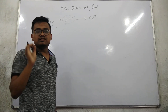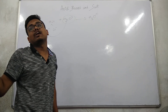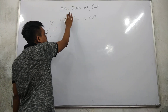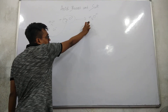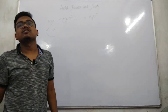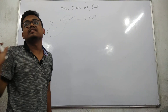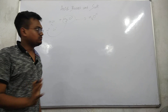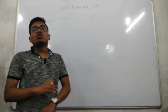So an acid is a compound which, when dissolved in water, yields hydronium ion as the only positively charged ion — there is no other positive ion other than the hydronium ion. That is the definition of acid. Now, what is a base?